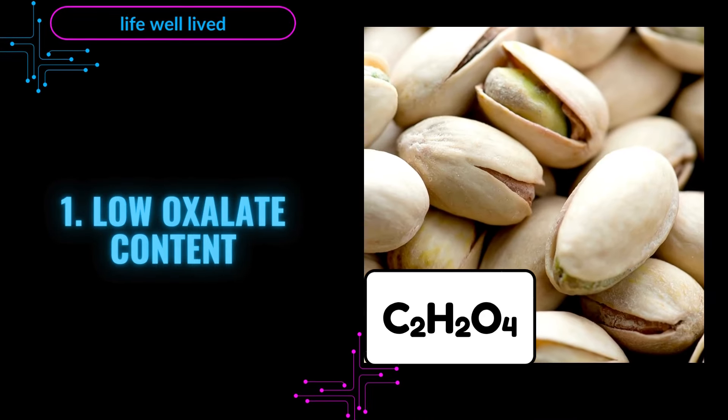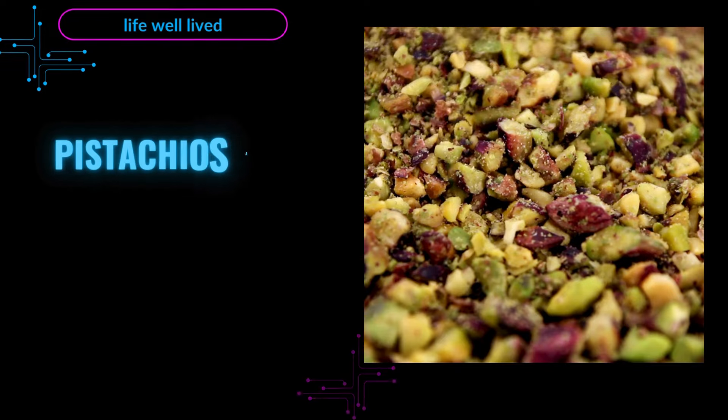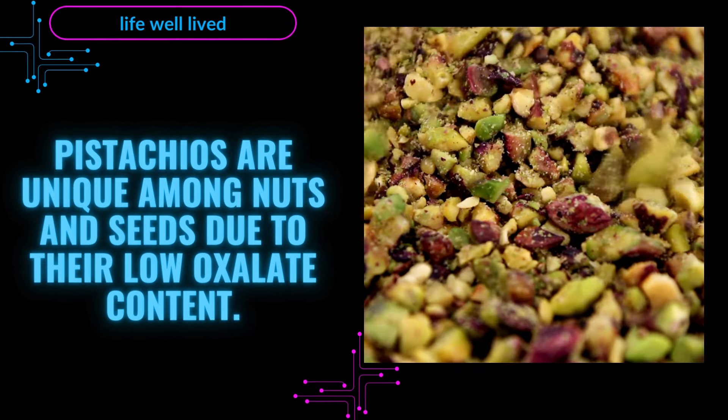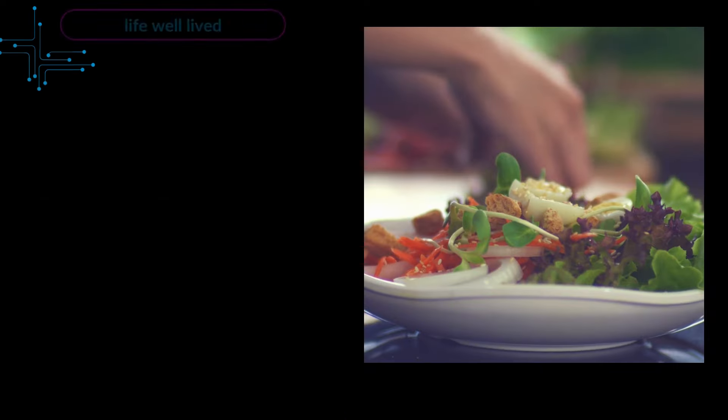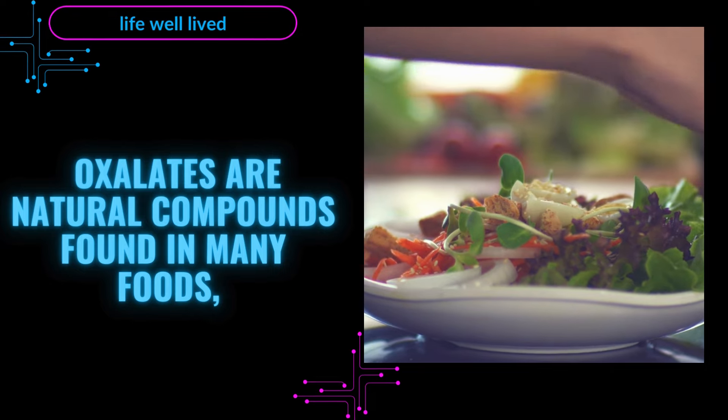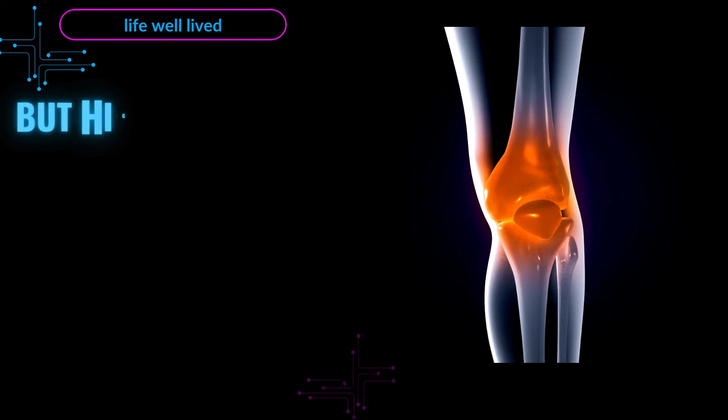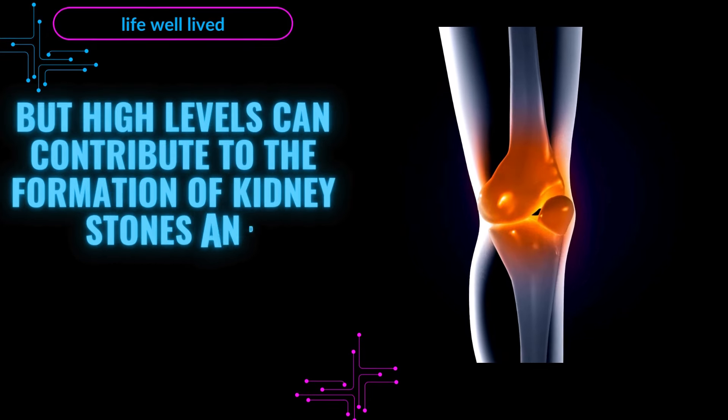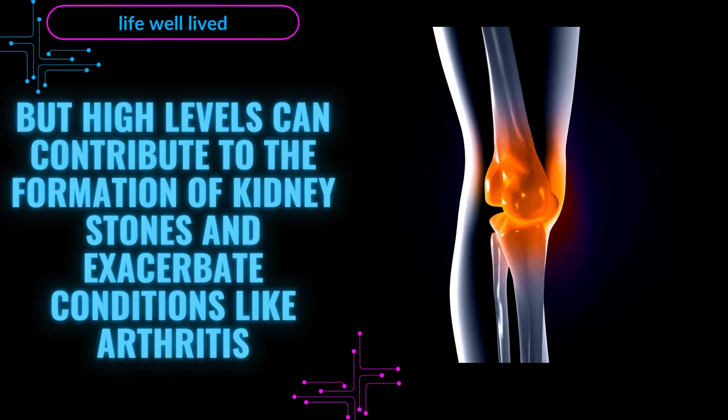Number one: Low oxalate content. Pistachios are unique among nuts and seeds due to their low oxalate content. Oxalates are natural compounds found in many foods, but high levels can contribute to the formation of kidney stones and exacerbate conditions like arthritis.